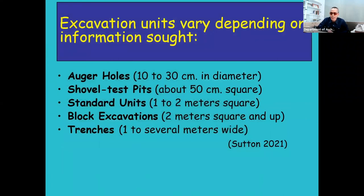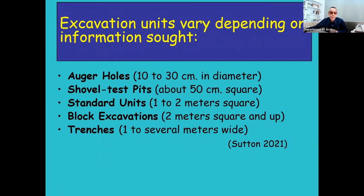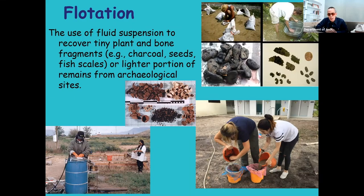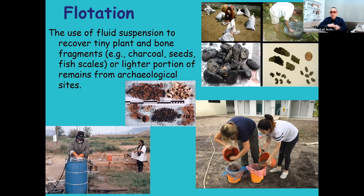You can do small test units or standard units, block excavations, or auger coring — again, depending on your research questions and site conditions. I also recommend doing flotation if possible. Flotation technique uses fluid suspension — small materials like bone fragments, charcoal, seeds, and fish scales that are lighter will float on the surface of the water so you can scoop and collect them. Sometimes flotation will lead to the discovery of important remains about diet or the paleo-environment. It's important to do flotation, it's not that complicated or expensive — you can do bucket flotation or machine flotation.